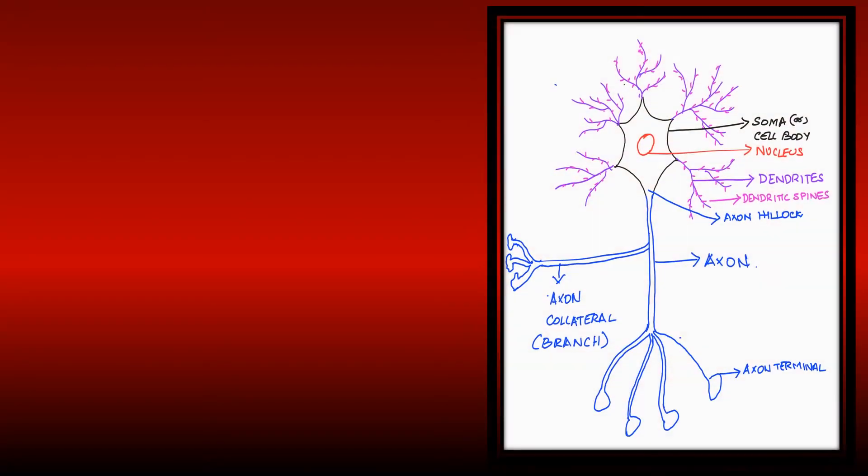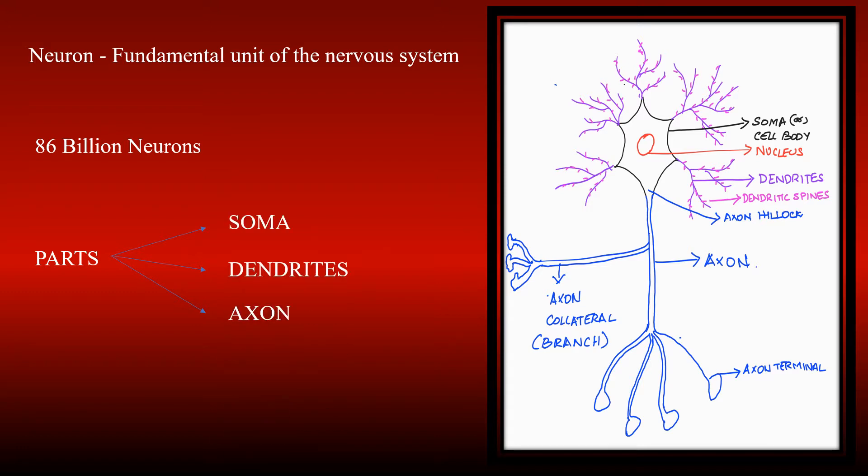As said in the neuron doctrine video, neurons are the fundamental unit of the nervous system. Did you know there are about 86 billion neurons in an average human brain? A neuron has three main parts: the soma, the dendrites, and the axon.